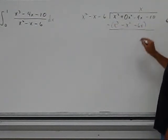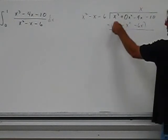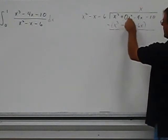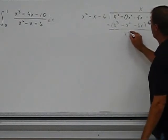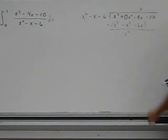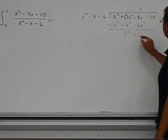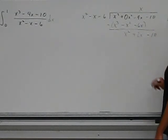Remember you're subtracting this whole term. So I have x cubed minus x cubed is 0, 0 minus a negative x squared is positive x squared, negative 4 minus a negative 6 is positive 2x minus 10, and now we're going to repeat the process.